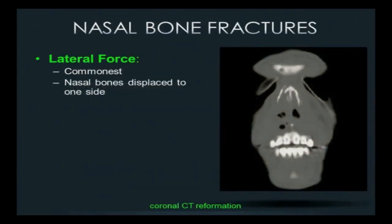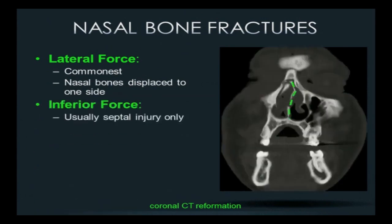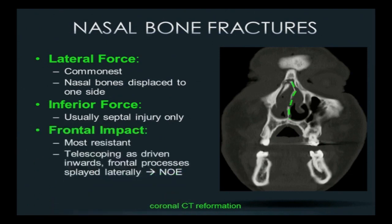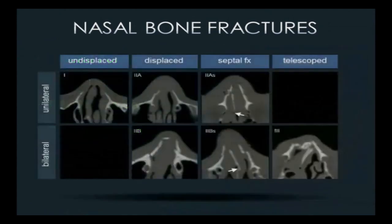The most common injuries come from a lateral force — on a coronal image you can see the nasal bones displaced to one side. An inferiorly directed force like an uppercut will more likely fracture the nasal septum. A frontal impact is toughest because of the thicker frontal process of the maxilla behind. Once you overcome that, the very fragile medial orbital wall bones telescope, driving us into the NOE territory. When describing nasal fractures, you want to note displacement, septal involvement, telescoping, and whether the injury is unilateral or bilateral.